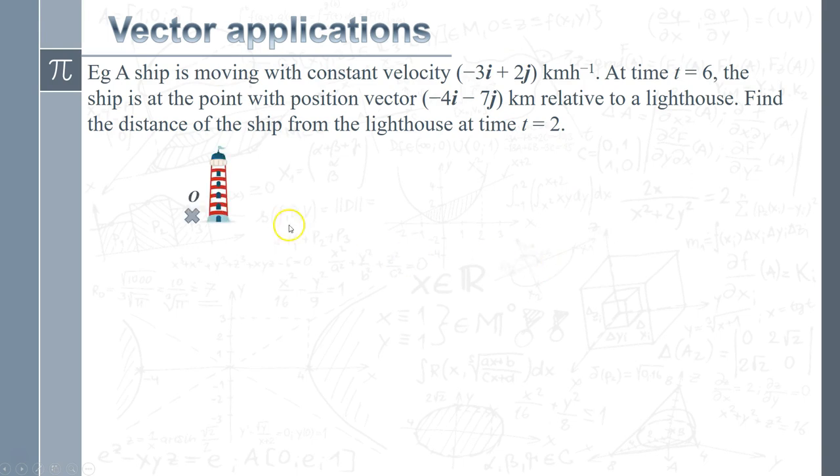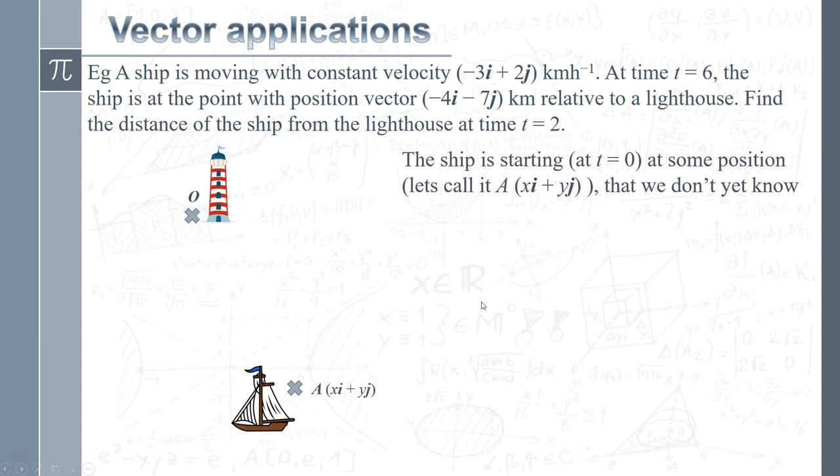So we've got our lighthouse, which I'm going to refer to as the origin, so everything's going to be relative to that. And we've got our ship at some point to begin with. So when t equals zero, it's starting. I'm going to say it's down here somewhere. We've got this position vector, which I'm calling xi plus yj. I don't know what that is. I'm just going to be using x and y for now.